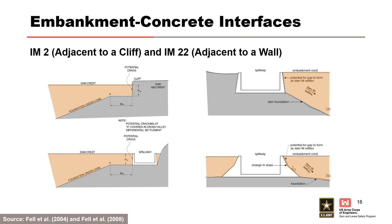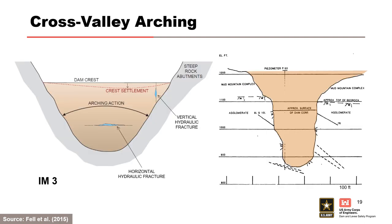IM2 and IM22 are for cracking or a gap that may form adjacent to walls or cliffs due to the earth fill settling away from the wall during and after construction, especially with steep walls. Deformations of flexible or under-designed retaining walls, such as those designed for active instead of at-rest earth pressure, can also lead to cracks or gaps. IM3 is for cross-valley arching, which can occur in narrow and steep valleys. Vertical stresses are shed onto the sides of the valley, which can lead to hydraulic fracture. The Corps of Engineers' Mud Mountain Dam in Washington — a 425-foot-high dam extending across a narrow rock gorge with steep volcanic rock walls more than 275 feet high — had defects in the core consisting of loose zones and voids due to settlement and arching. The dam was remediated with a cutoff wall and remedial grouting.